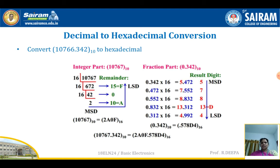Together you can represent the hexadecimal value as 2A0F.578D4 with base 16. This is similar to converting from decimal to binary — there you divide by 2 and multiply by 2 for the fractional part, whereas here you divide by 16 and multiply by 16.